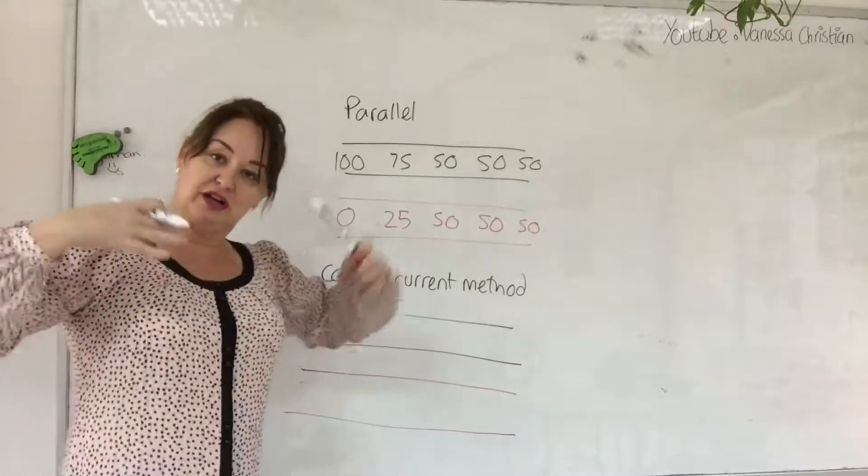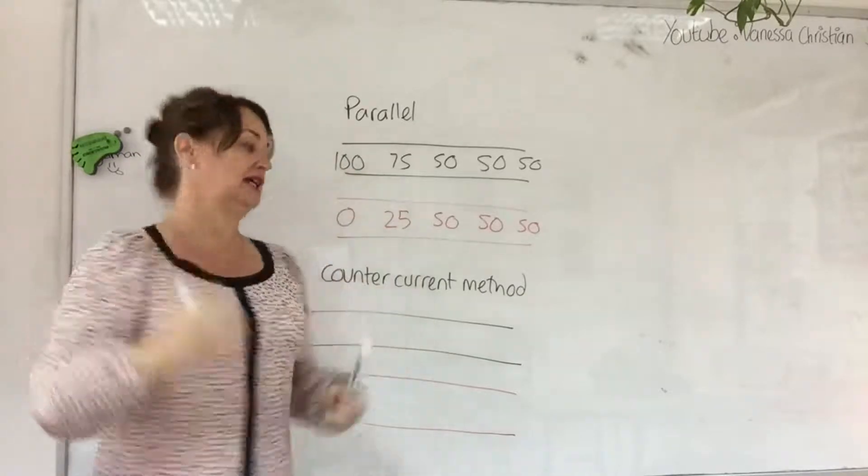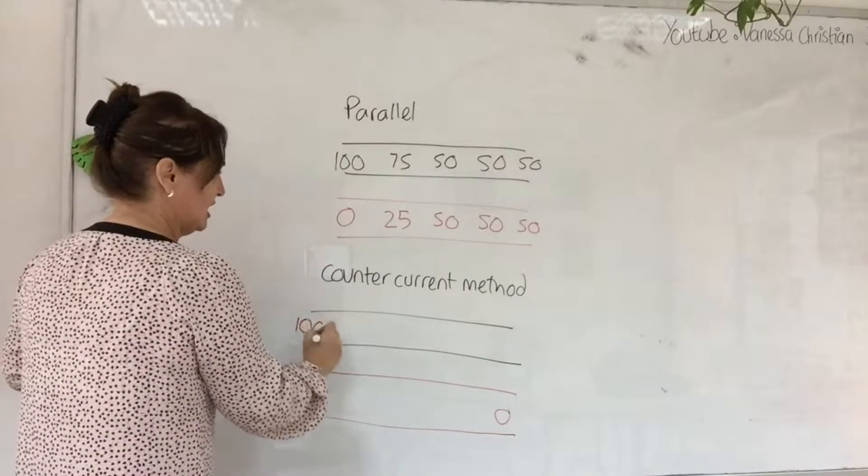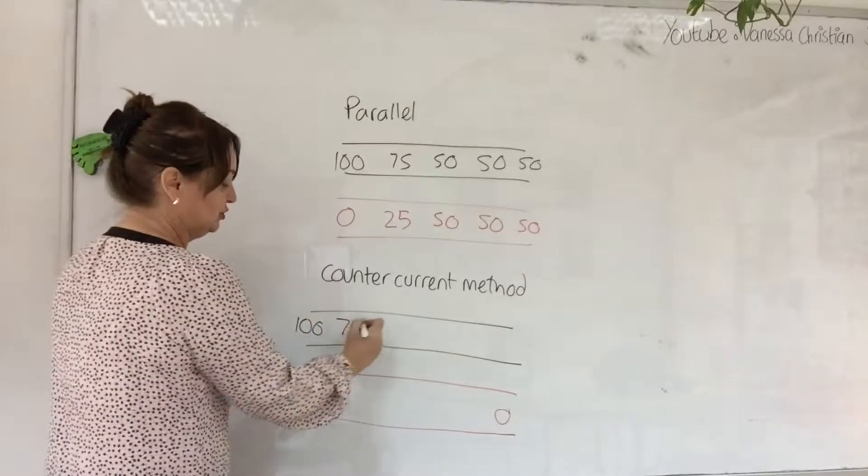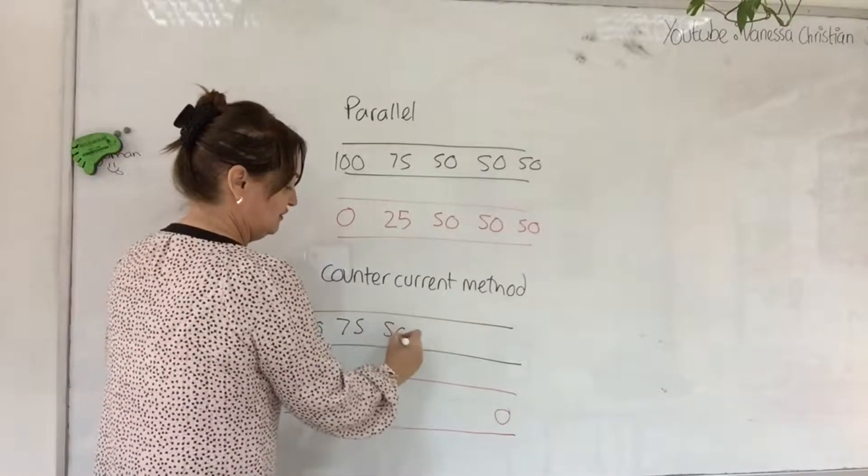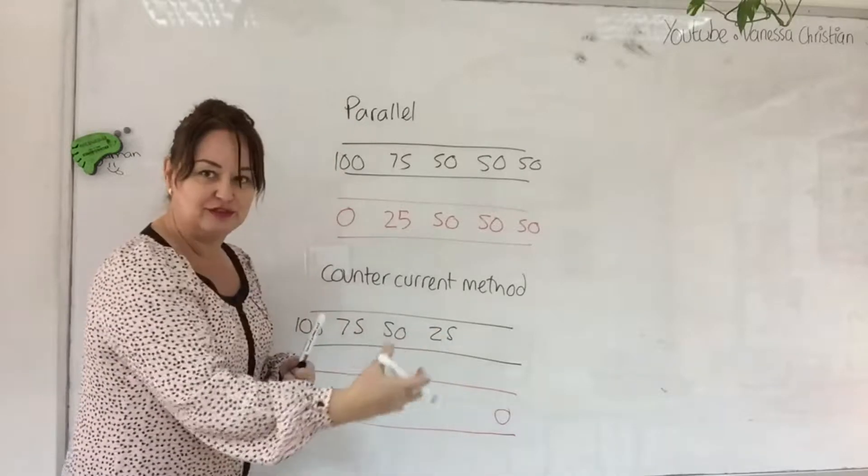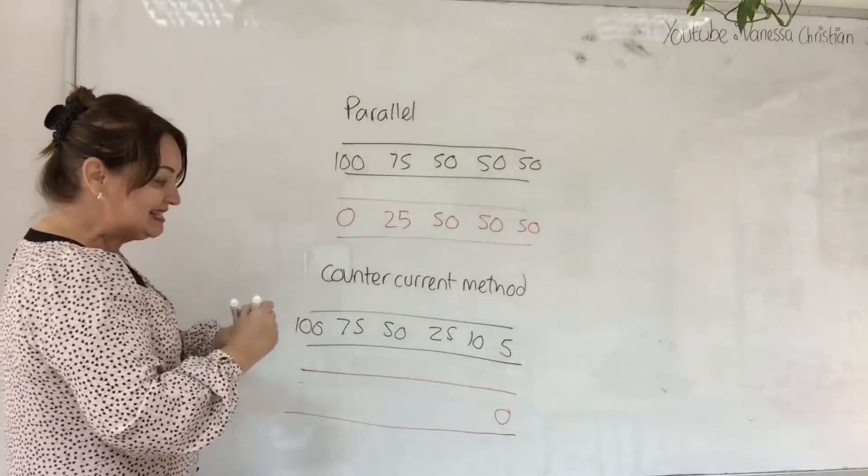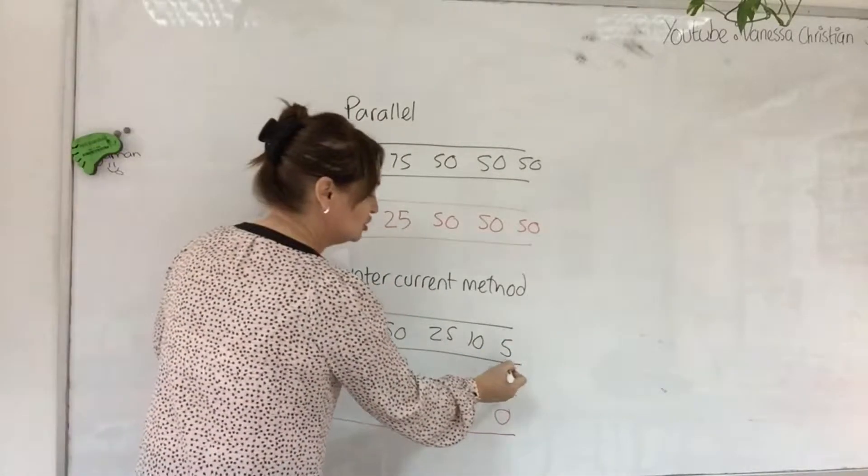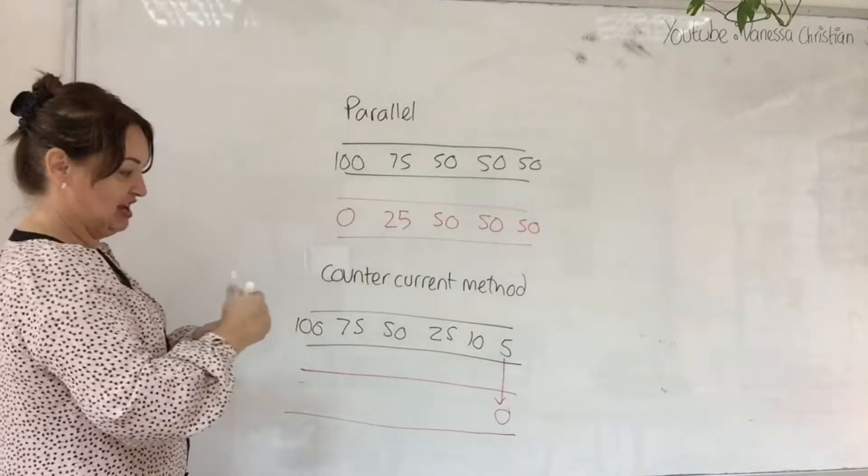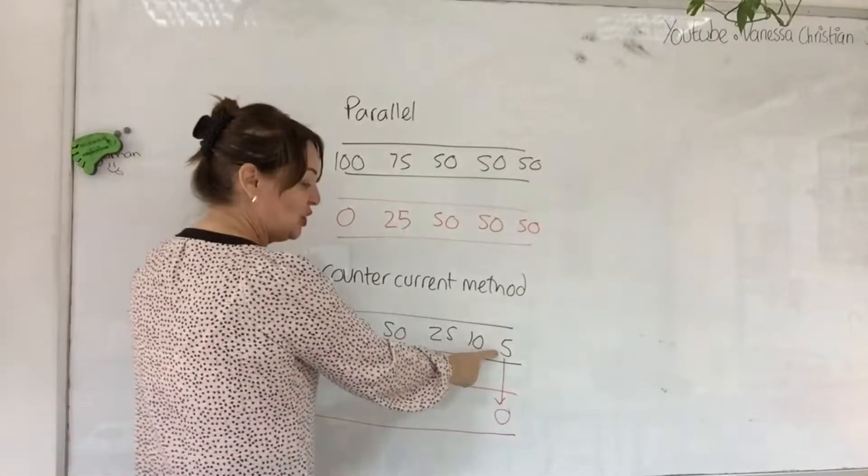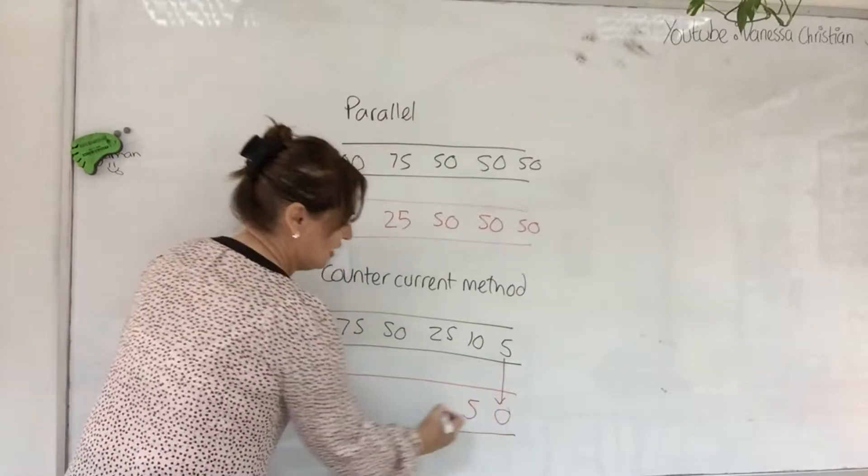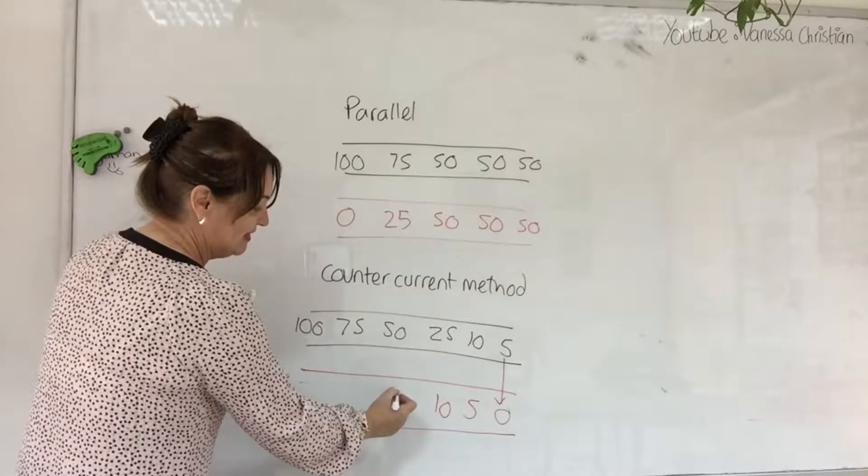Counter current is moving opposite like this, so whatever it is, it's coming in at zero there and it's going in at 100 there. So even if this continues to lose 75, 50, 25, let's even make it a bit more extreme, let's go 10, let's go 5. We still have a concentration gradient. Even at this low concentration here it will still move over to there.